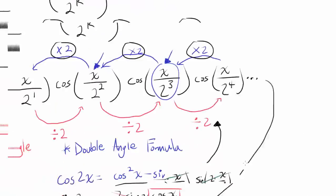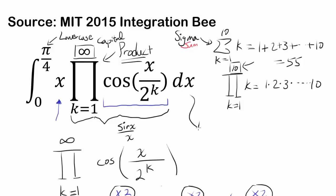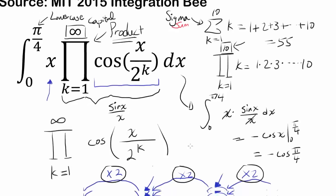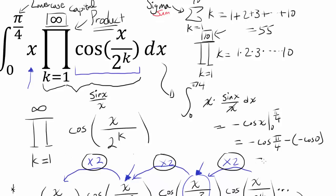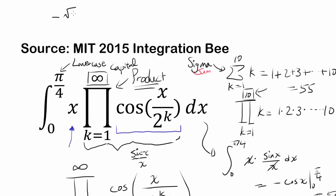That tells us this entire crazy infinite product equals sine x over x. So our integral simplifies beautifully to the integral from 0 to π/4 of x times (sine x / x) dx, which is just the integral of sine x — equal to negative cosine x from 0 to π/4. Evaluating: negative cosine(π/4) minus negative cosine(0) equals negative √2/2 plus 1. So our final answer is 1 minus √2/2.